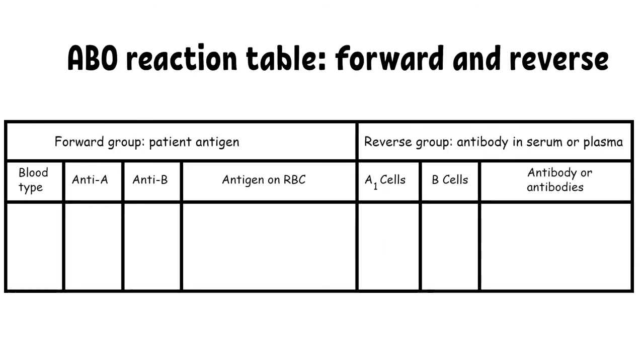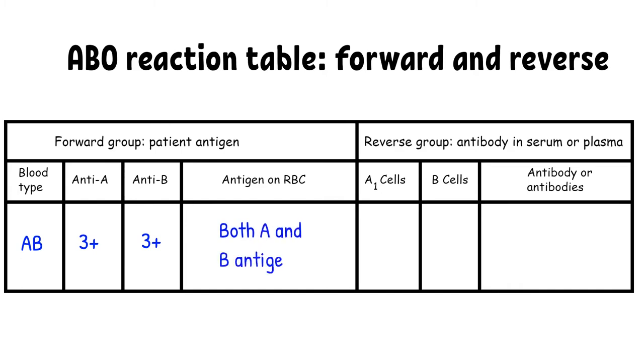A person with AB blood groups will have both A and B antigens on the red blood cell surface, which means that this group of people will not have anti-A or anti-B.